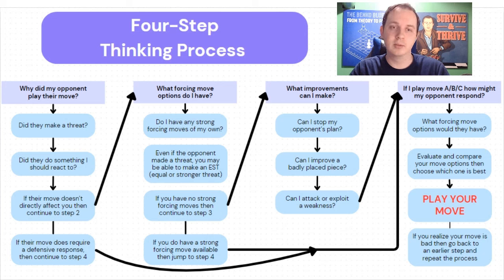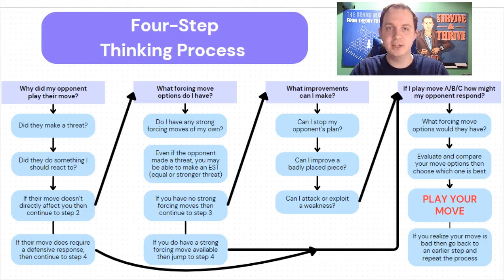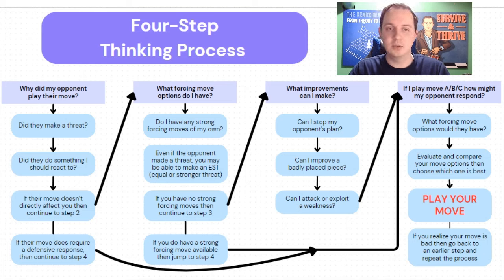Step number one: why did my opponent play their move? Below that is the second question: did they make a threat? Did they do something I should react to? If they attacked your queen and you ignored it, you lose your queen — probably a bad outcome. If their move does require a defensive response and you don't have a strong counterattacking move, you'll want to jump to step number four. We'll see game examples later where this question was implemented well and where ignoring it caused a big blunder.